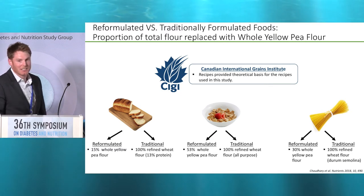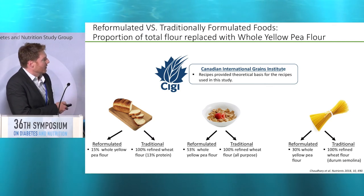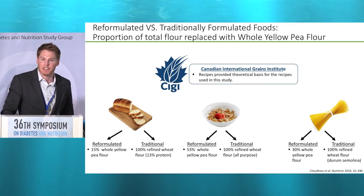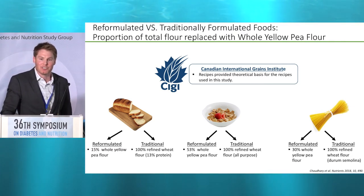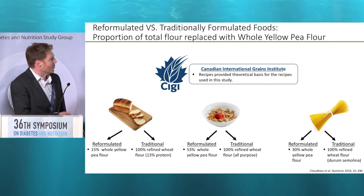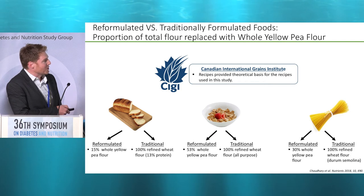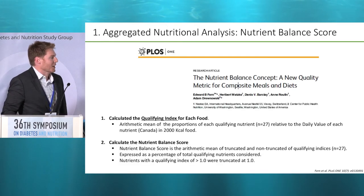These were actual products produced for functionality. For the bread, for example, only 15% of the flour was displaced because they wanted to make sure they could produce a bread that looked like bread, tasted acceptable to the consumer, and so on. So for the bread a 15% inclusion rate of whole yellow pea flour; for the breakfast cereal — which was a Rice Krispies-type product — 53%; and for pasta, displacement of durum semolina with 30% whole yellow pea flour.